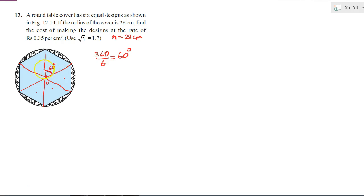Now, if this angle is 60 degrees, then this triangle will be an equilateral triangle. Why? Because every triangle with two radii as its sides is an isosceles triangle.